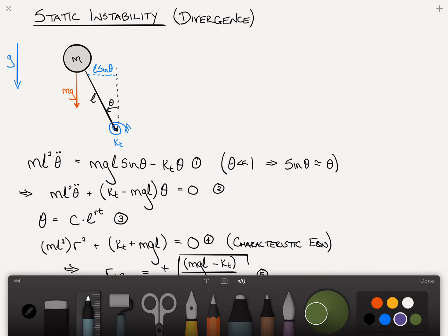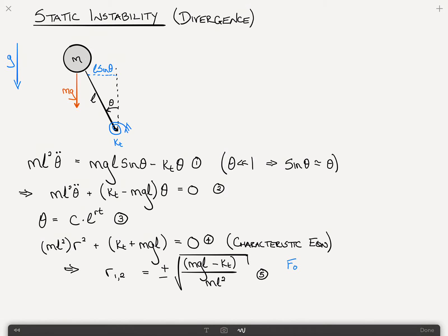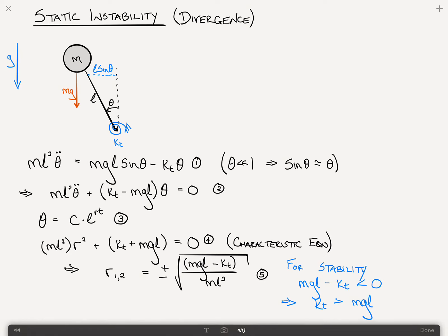So, from equation five, I can say that for stability, this means that m g l minus k sub t must be less than zero. And I'm saying strictly less than zero as opposed to less than equals to. Equals to would be borderline stable. And from this, we can infer that k sub t must be greater than m g l. And I'm going to leave it as greater than because equal to is borderline stability. For it to be stable, kt must be greater than m g l.